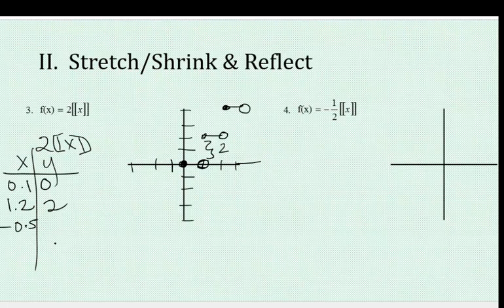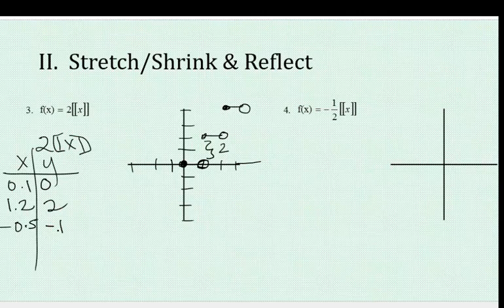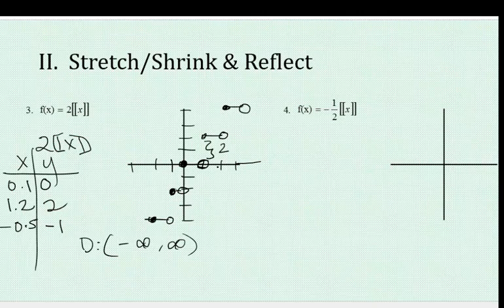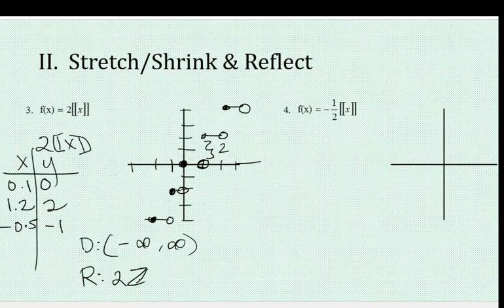If it's negative 0.5, the greatest integer less than or equal to negative 0.5 is negative 1 — remember, less than or equal to. Negative 1 times 2 is negative 2, so that's down here. The steps just continue on, but the y values jump by 2. So my domain is negative infinity to positive infinity because all the x values are represented. But what's happening to my y values is not every single integer is showing, because we're taking two steps at a time — it's the integers times 2. So you can represent that range as 2Z.